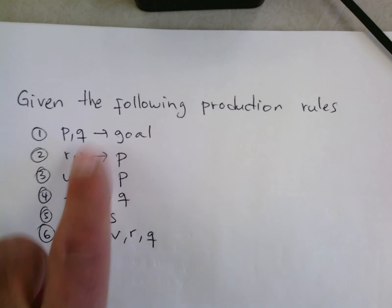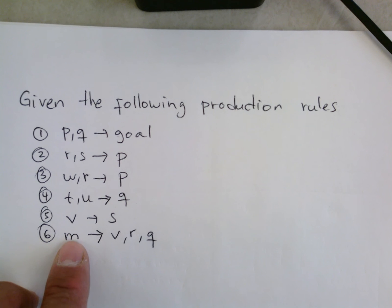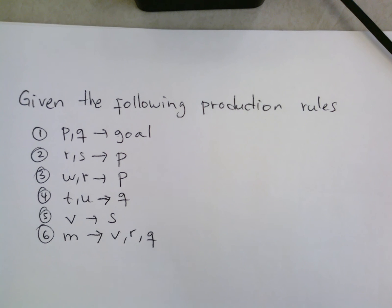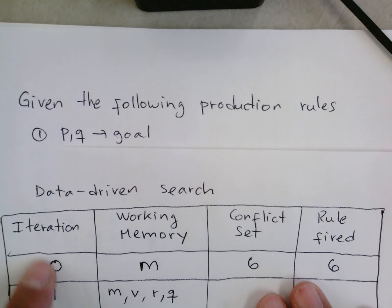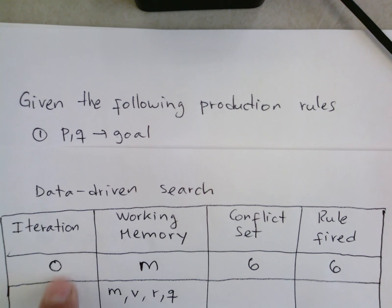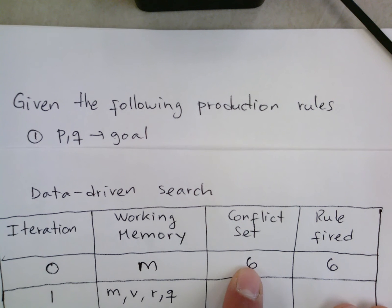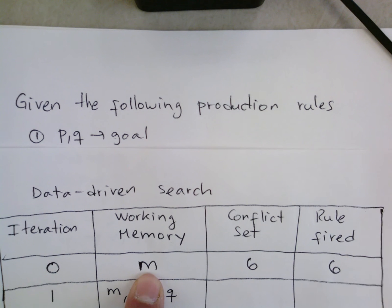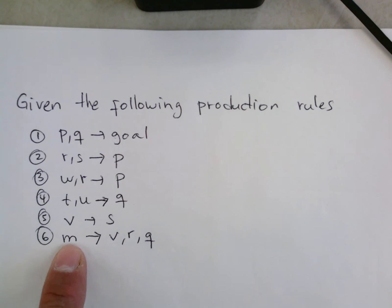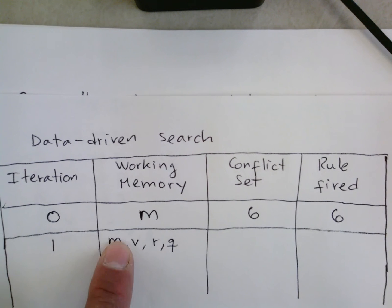Initially in working memory we have rule six — this is the beginning — so that means we have the start M in working memory. This is what it means in data-driven search. M comes from rule six, and this is the rule that is initially fired. When we fire rule six, M is substituted as a fact that is true, and we are adding three new facts to working memory.